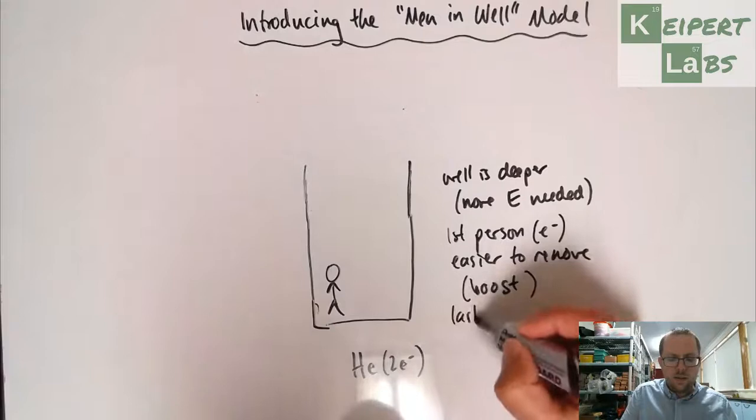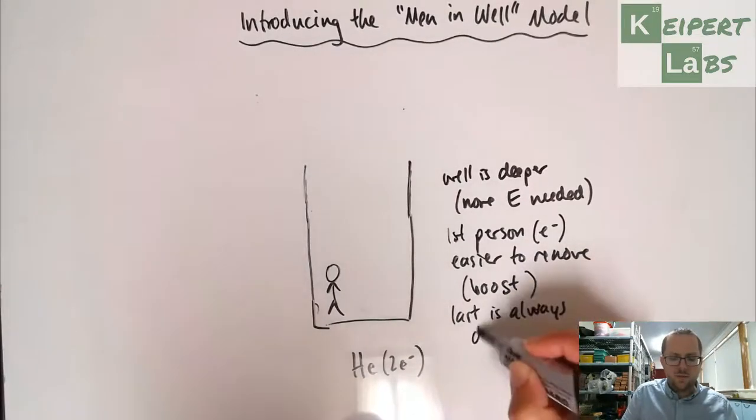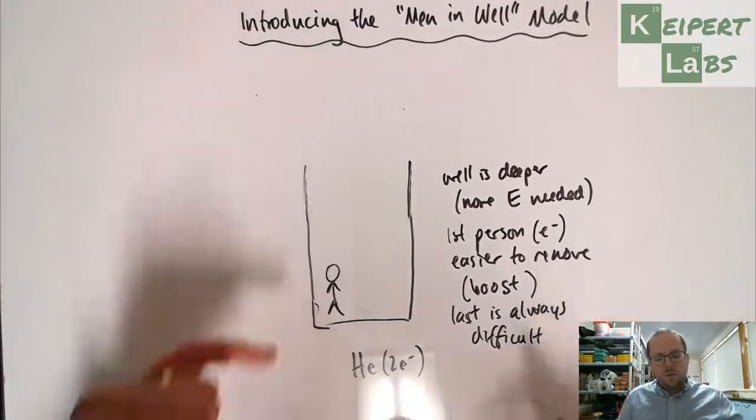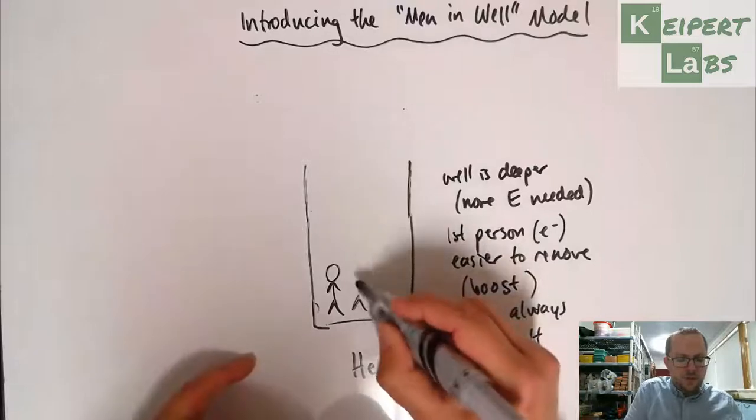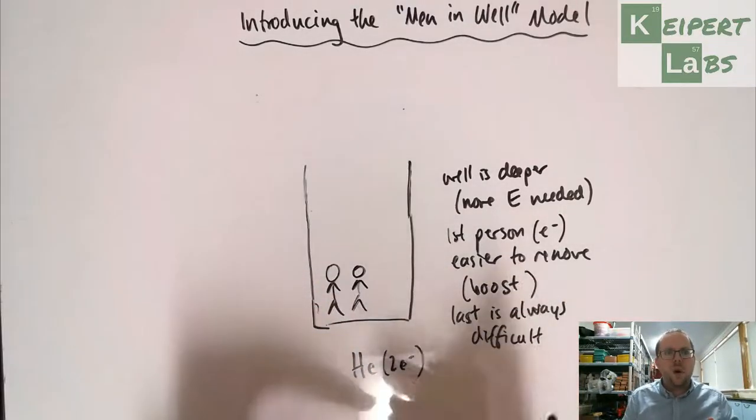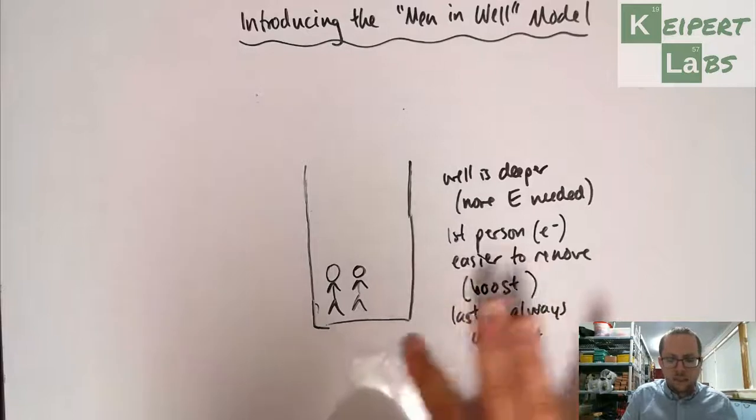Last is always hard, always difficult. We had two stuck down the bottom of a slightly deeper well and the fact that we have two at the bottom means that one of those is always easier to get out than the other.